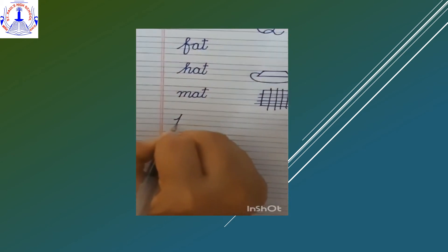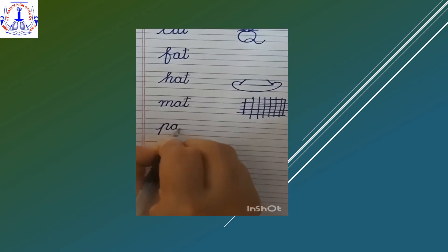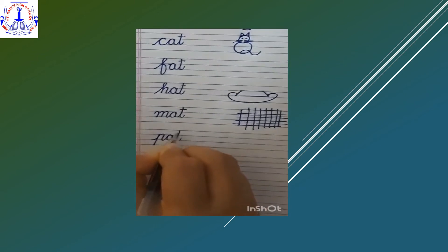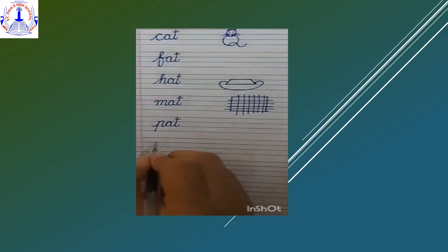Move to the next line and write P-A-T, pat. Small cursive P joining with A joining with T. P-A-T, pat.